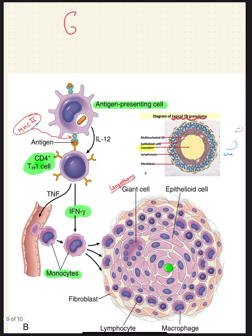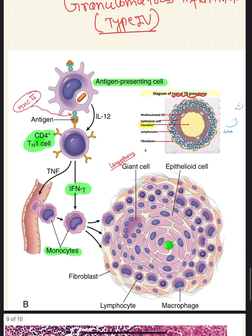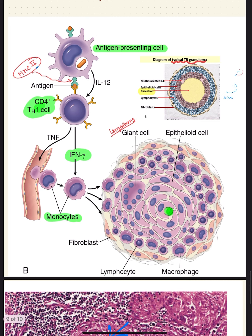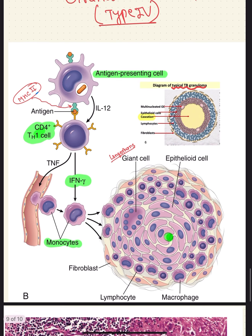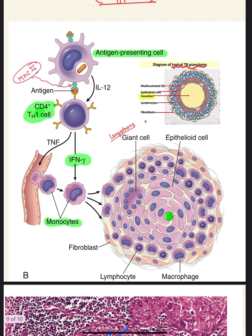Hello everyone, today we will be learning about granulomatous inflammation, or the delayed hypersensitivity reaction — also known as type 4 hypersensitivity reaction. Let's learn from this diagram how the granuloma is formed in the case of type 4 hypersensitivity reaction. First, an antigen is presented to the antigen-presenting cell.